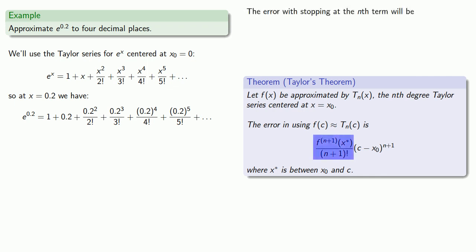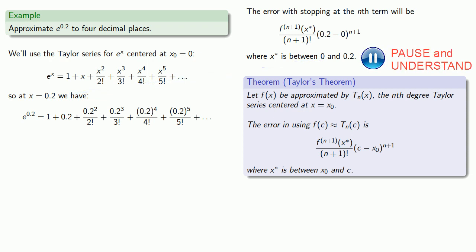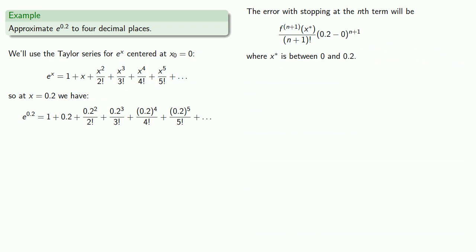The error with stopping at the nth term will be the n plus first derivative evaluated someplace divided by n plus one factorial times our x value minus the center to power n plus one. Since we're evaluating our Taylor polynomial at zero point two and our center is at zero, this is going to be zero point two minus zero to power n plus one. Meanwhile, x star is between our center at zero and zero point two. Now all the derivatives of e to the x are just e to the x, so we can simplify that n plus first derivative and the expression for our remainder.